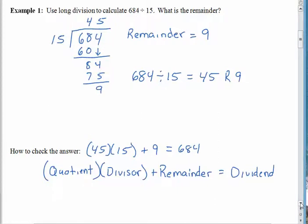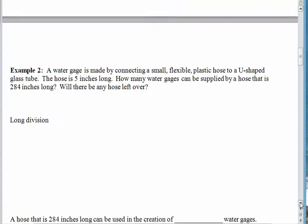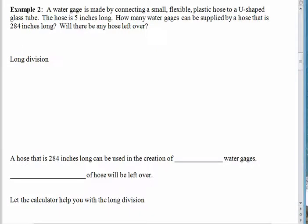So let's try another one here. We want to create some water gauges. A water gauge is made by connecting a small flexible plastic hose to a U-shaped glass tube. The hose itself is about 5 inches long. So we have a bunch of hose that happens to be 284 inches long. We would like to make as many water gauges as possible, and also find out if there will be any hose left over. So we're going to take this 284 inches, cut off 5 inches, cut off another 5 inches, cut off another 5 inches, and keep on going until we can't do this anymore. And the sense of repeated subtraction tells us that we, of course, need to divide.